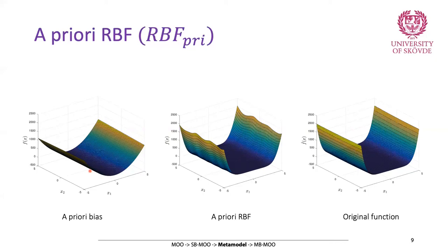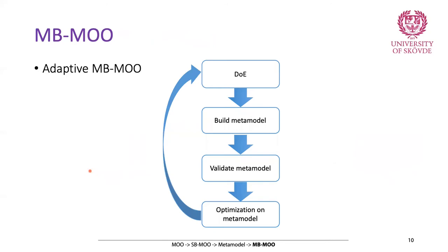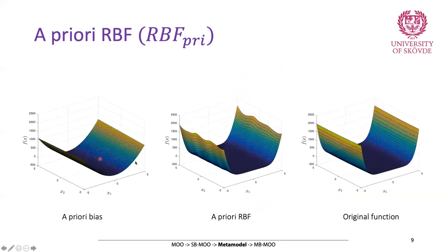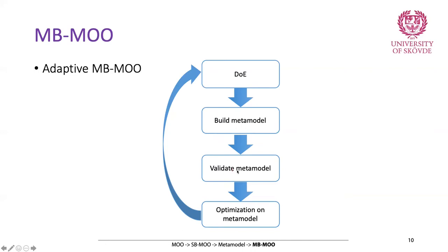Now we know what a metamodel is — an approximation function of our actual model — but how are we going to use it in multi-objective optimization? One very simple and straightforward approach is shown in this flowchart. First you create your DOE (design of experiment), you build your metamodel, then you have to validate your metamodel — test it to see how accurate it is. Maybe your metamodel is not accurate enough and doesn't resemble the original function. If you use an inaccurate metamodel, you're not going to have accurate results, so validation is essential.